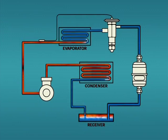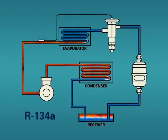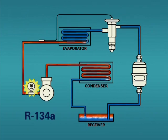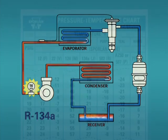For systems with a receiver, saturated refrigerant will also be found at the liquid vapor interface at the refrigerant level in the receiver. For our example, we will use R134A. If we measure the pressure of the refrigerant, we can easily determine its saturation temperature.